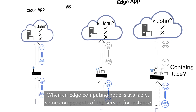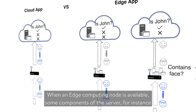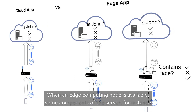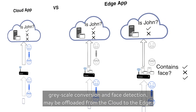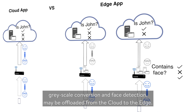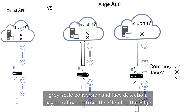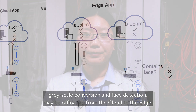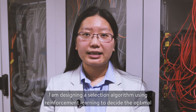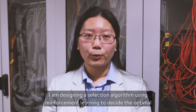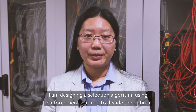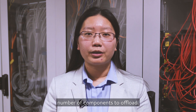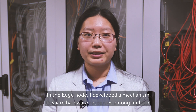When an edge computing node is available, some components of the server — for instance, greyscale conversion and face detection — may be offloaded from the cloud to the edge. I'm designing a selection algorithm using reinforcement learning to decide the optimal number of components to offload.